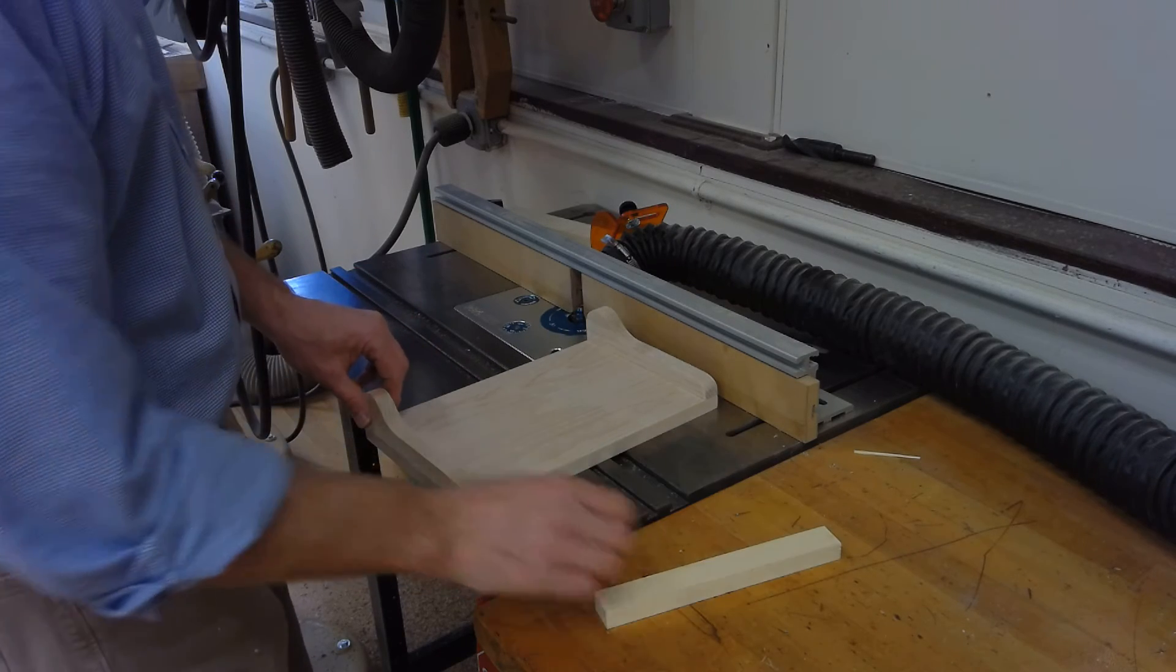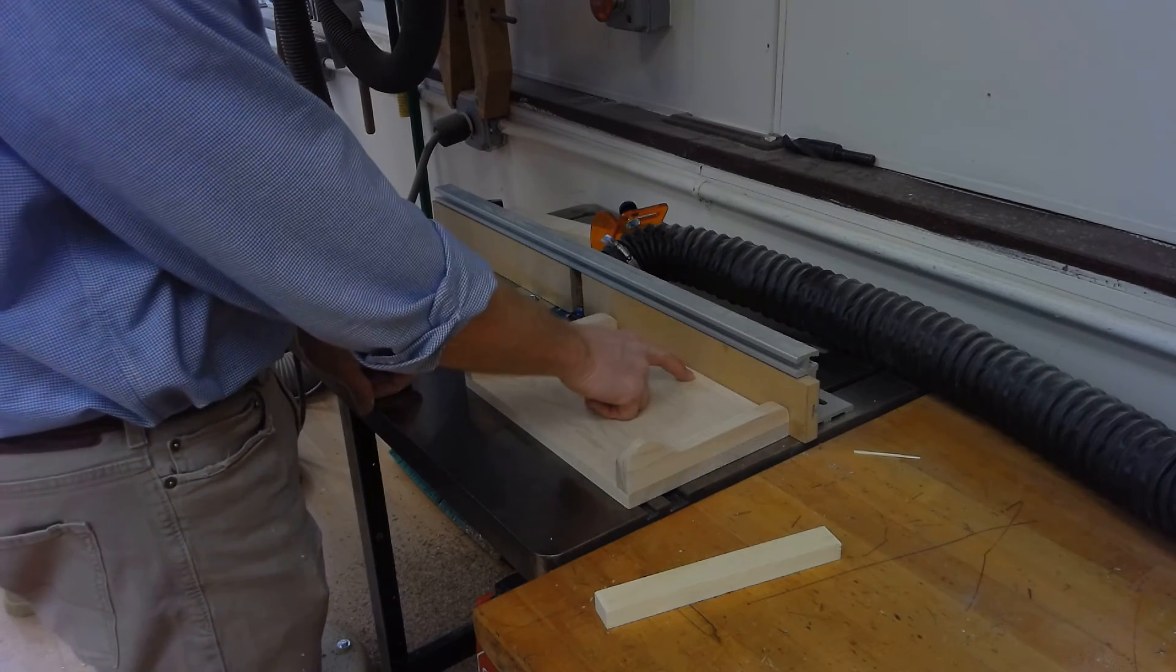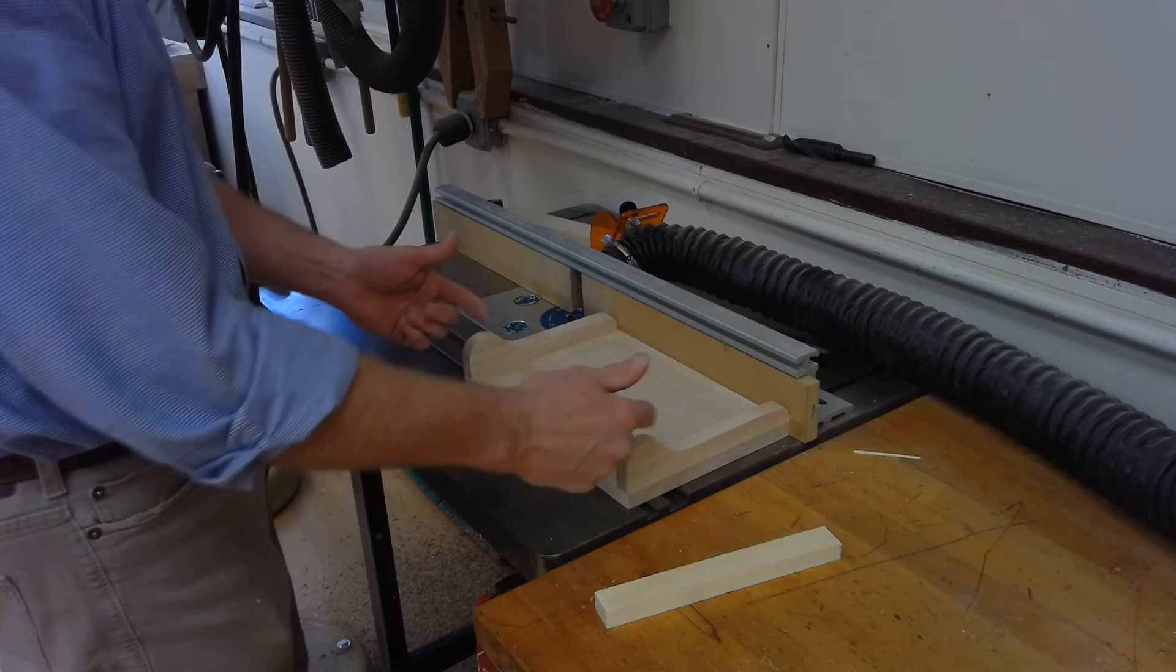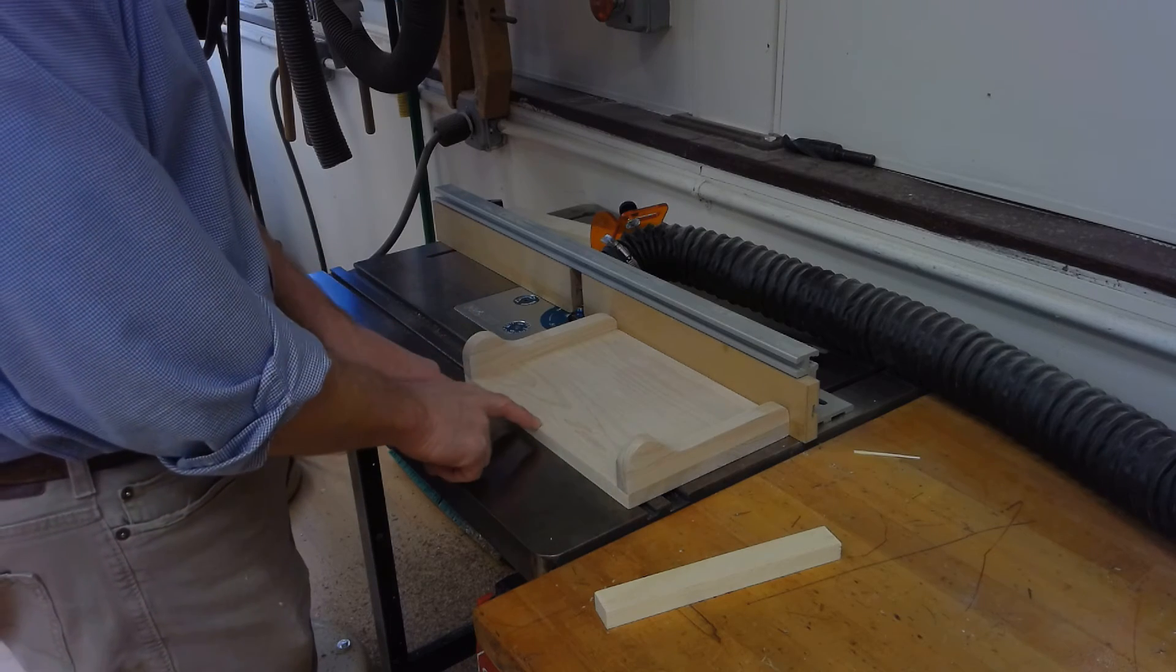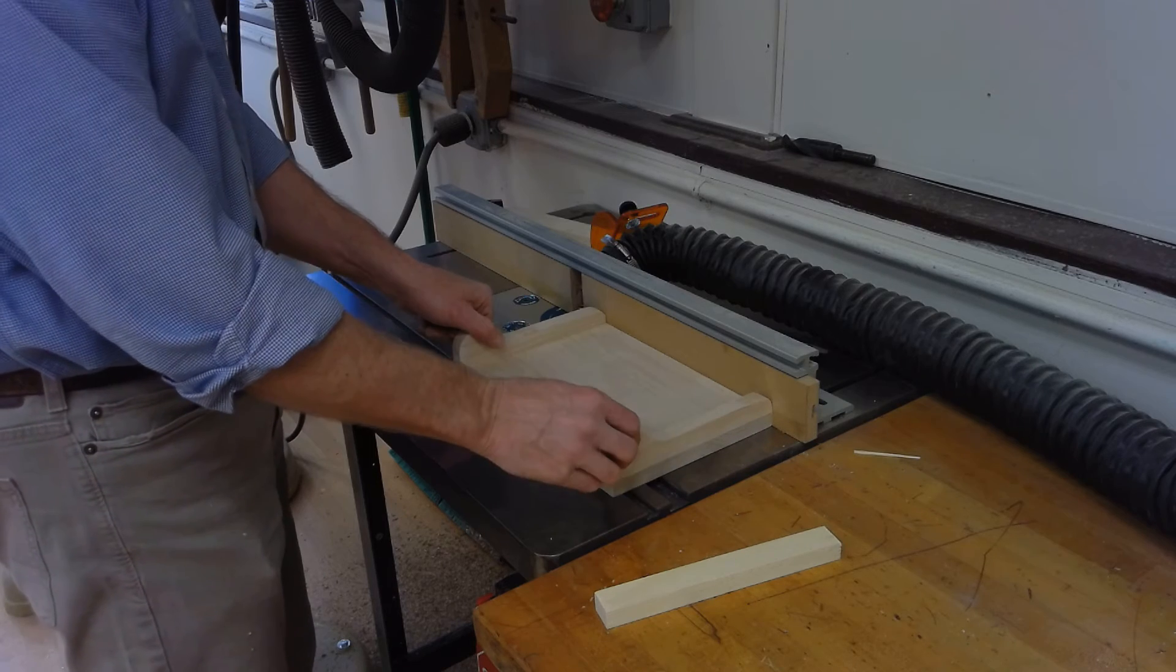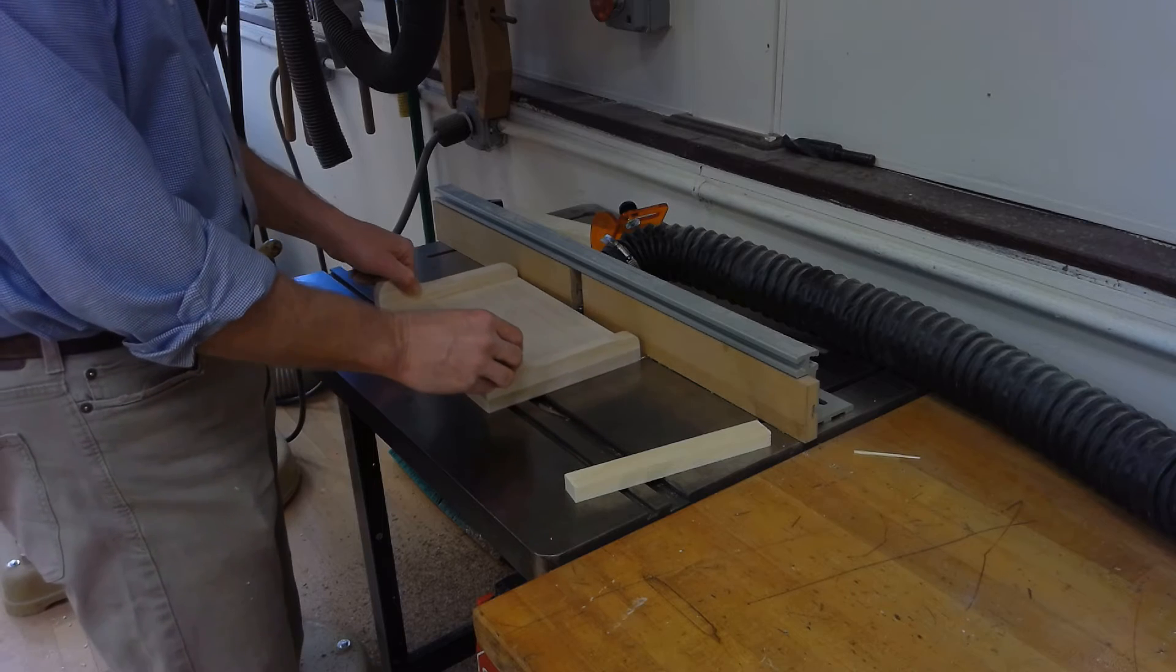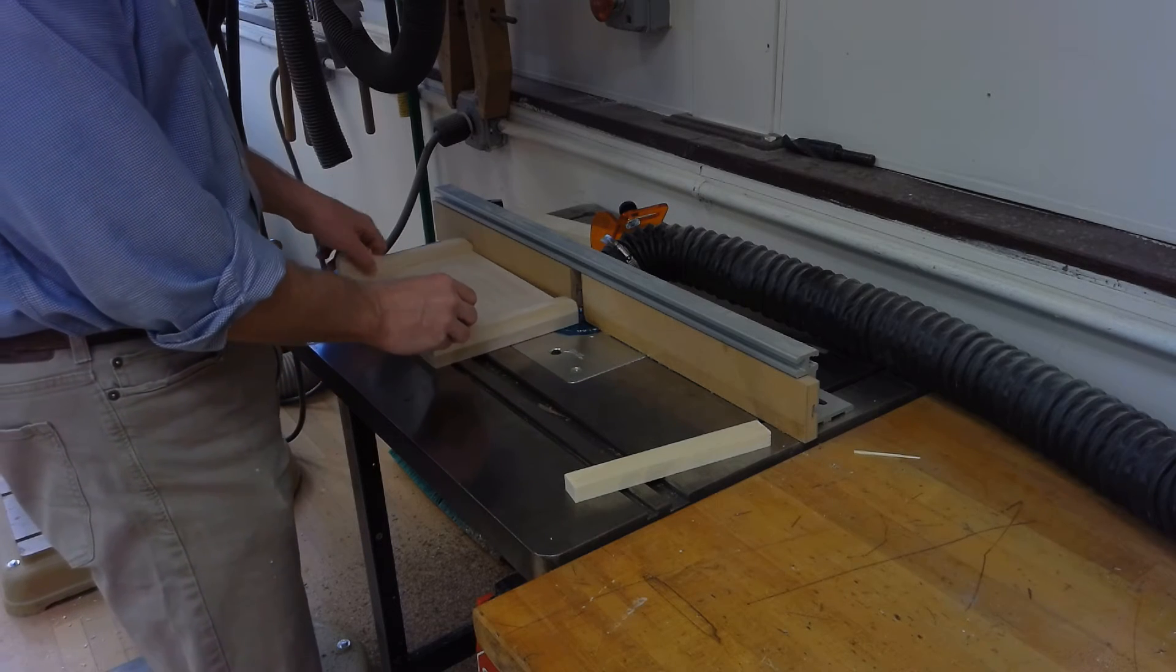Now after that, we spin it around and we're going to do the front edge. That's the front edge, back here is the back, we don't want to do the back. When we do the front edge, we're going with the grain. You don't need the support stick anymore and you'll find it routers much easier.